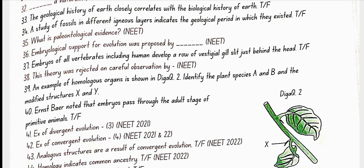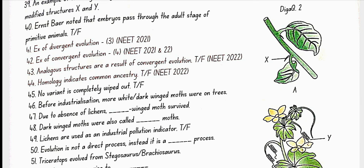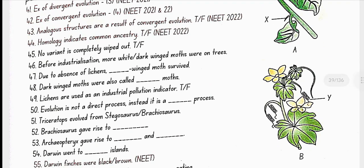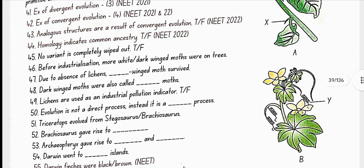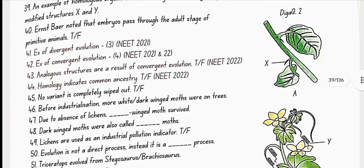This theory was rejected on careful observation by Karl Ernst von Baer. An example of homologous organs is shown in Diagram 2, identify the plant species A and B and the modified structure X and Y. Here in Diagram 2, A is Bougainvillea and B is Cucurbita. In A, X is Thorn and in B, Y is Tendril. Example of divergent evolution is whales, bats, cheetah and human in the pattern of bones of forelimbs. Second example is vertebrate hearts or brains. And third example is thorn and tendrils of Bougainvillea and Cucurbita.